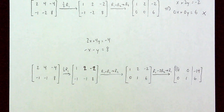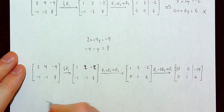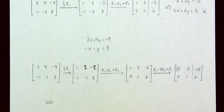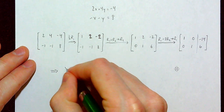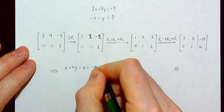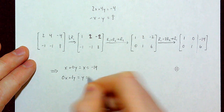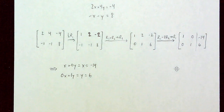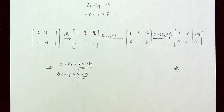I'll draw the vertical line to show this is the augmented matrix. Writing this out as a system: X plus 0Y, or just X, equals negative 14; and 0X plus 1Y, or Y, equals 6. So my two solutions are X equals negative 14 and Y equals positive 6.